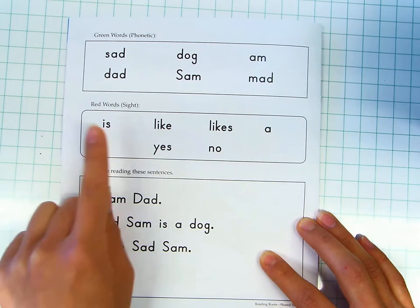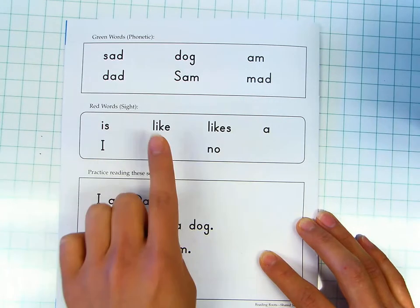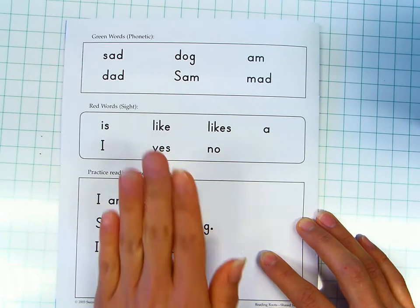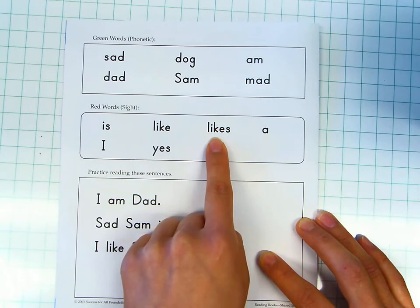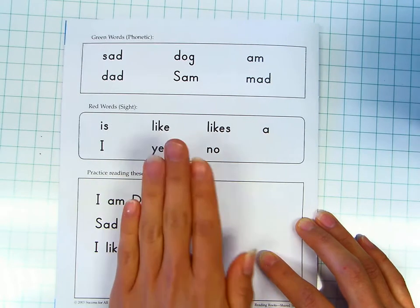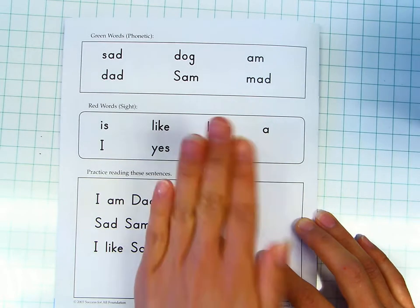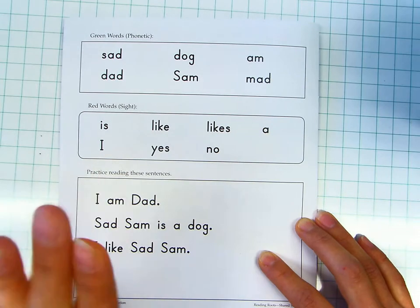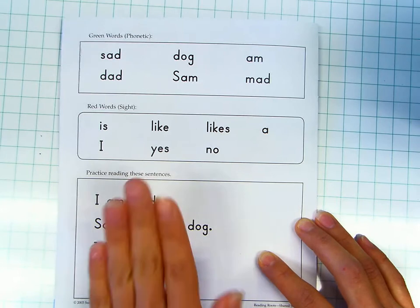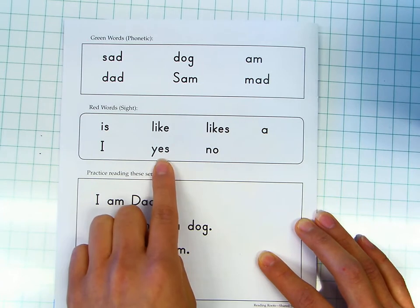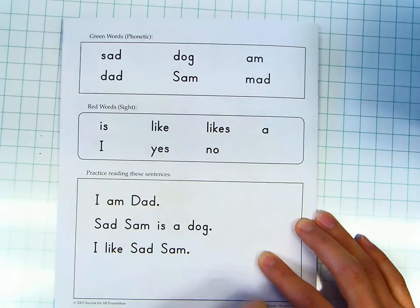Red words. Is. I-s: is. Like. L-i-k-e: like. Likes. L-i-k-e-s: likes. A. I. Yes. Y-e-s: yes. No. N-o: no. Your turn.